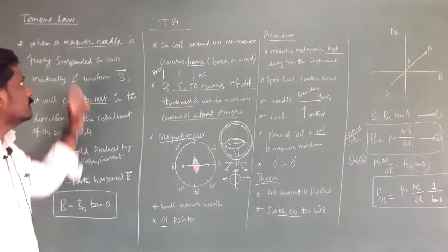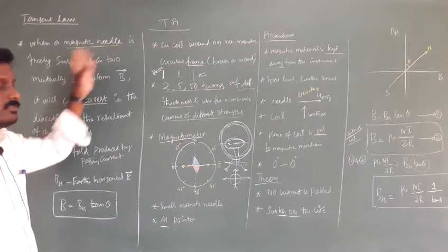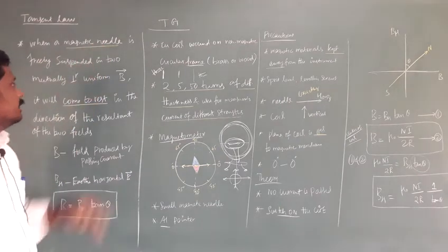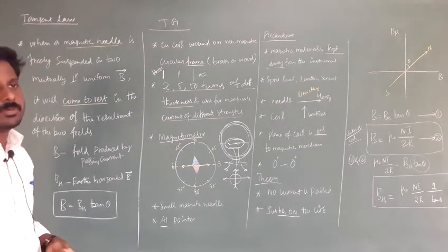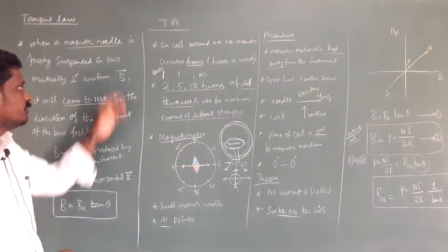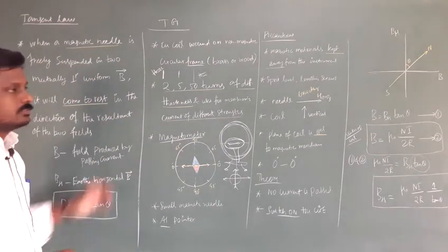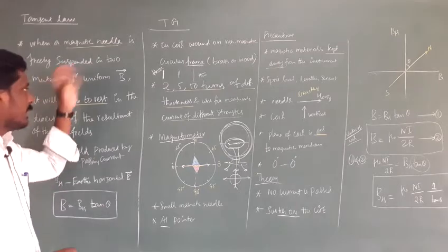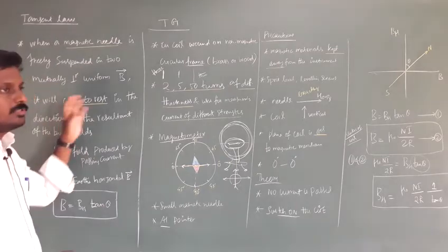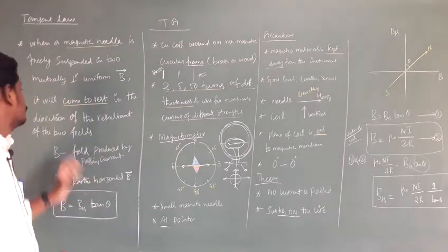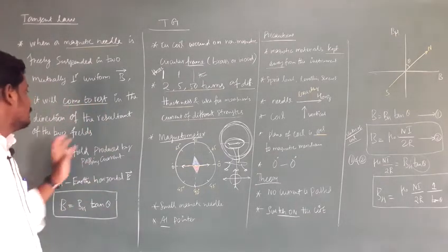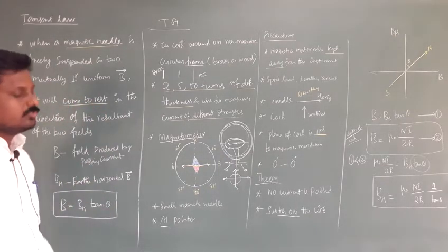Tangent law: a magnetic needle is freely suspended in two mutually perpendicular magnetic fields. The magnetic needle comes to rest in the direction of the resultant of the two fields.